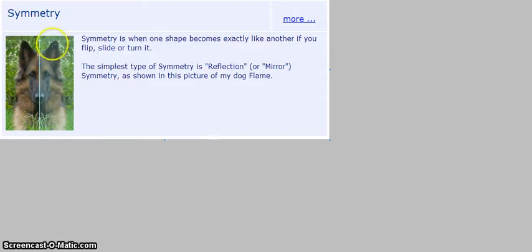So symmetry, the definition is, symmetry is when one shape becomes exactly like another if you flip, slide, or turn it. And the simplest type of symmetry is reflection, or mirror symmetry, and it's shown this picture of the dog. See if you draw a line right down the middle, you can see that this side is the same as the other.